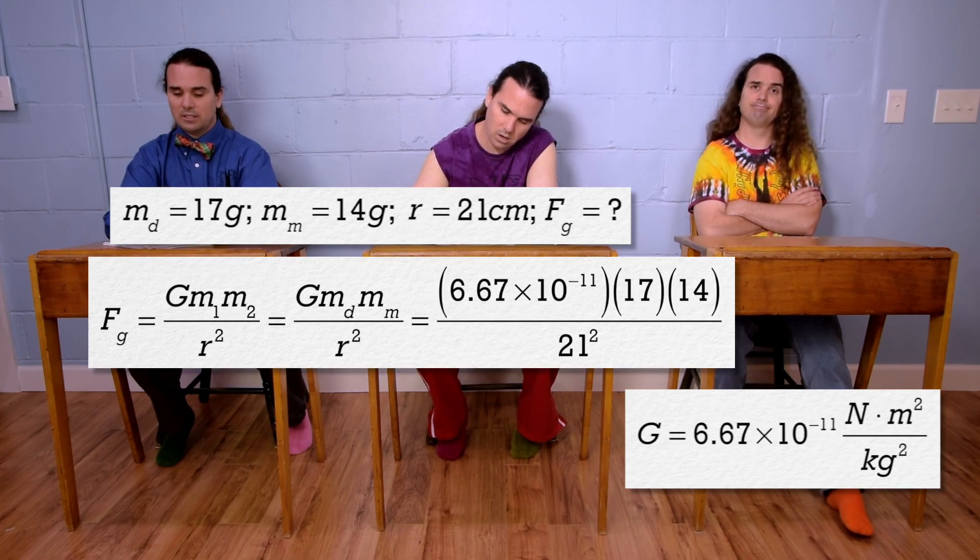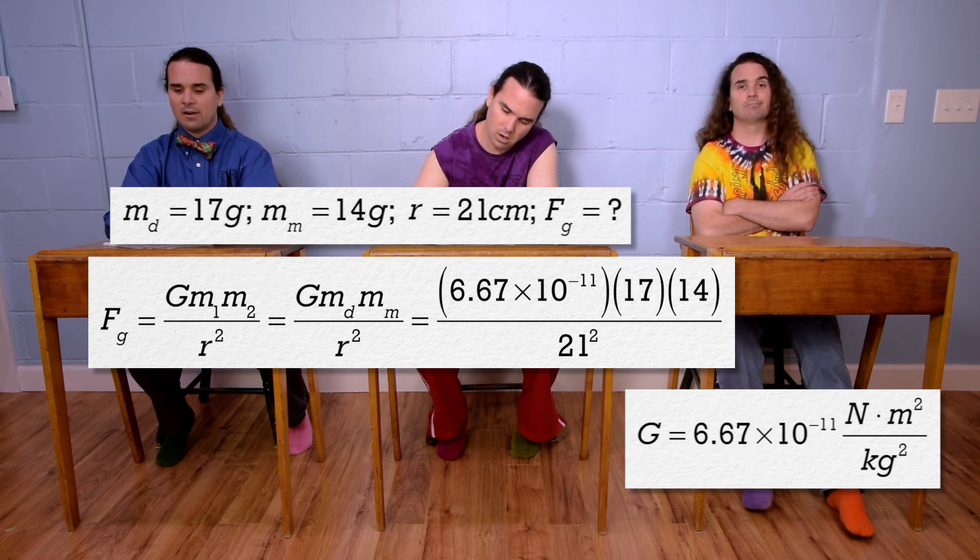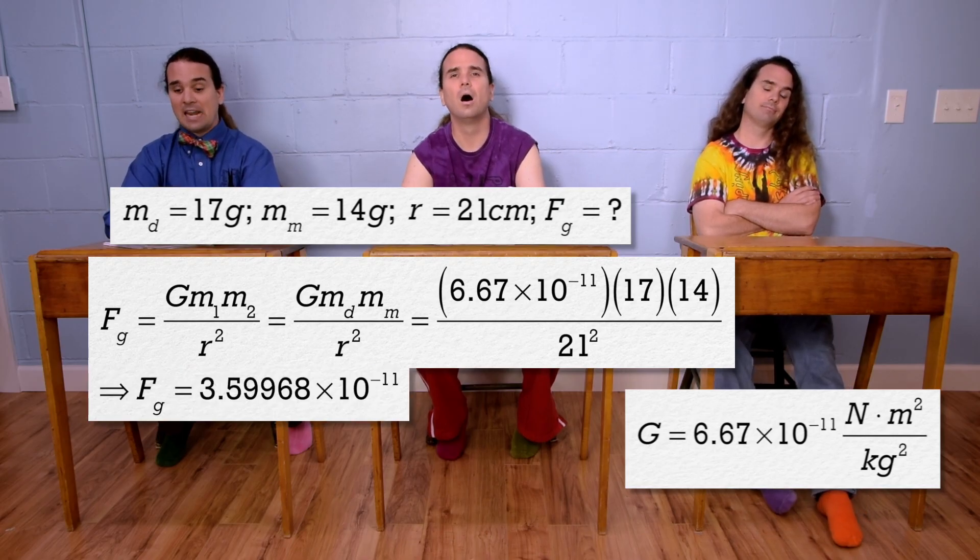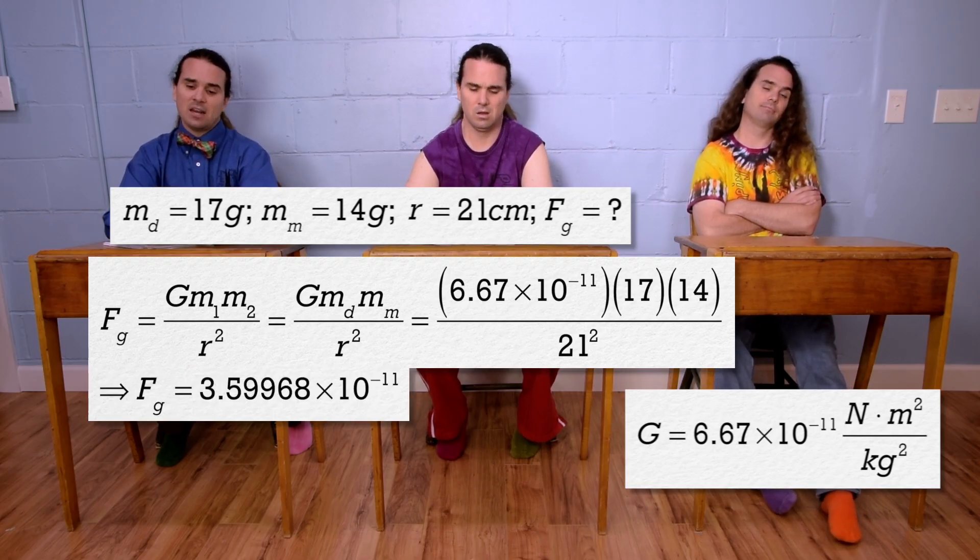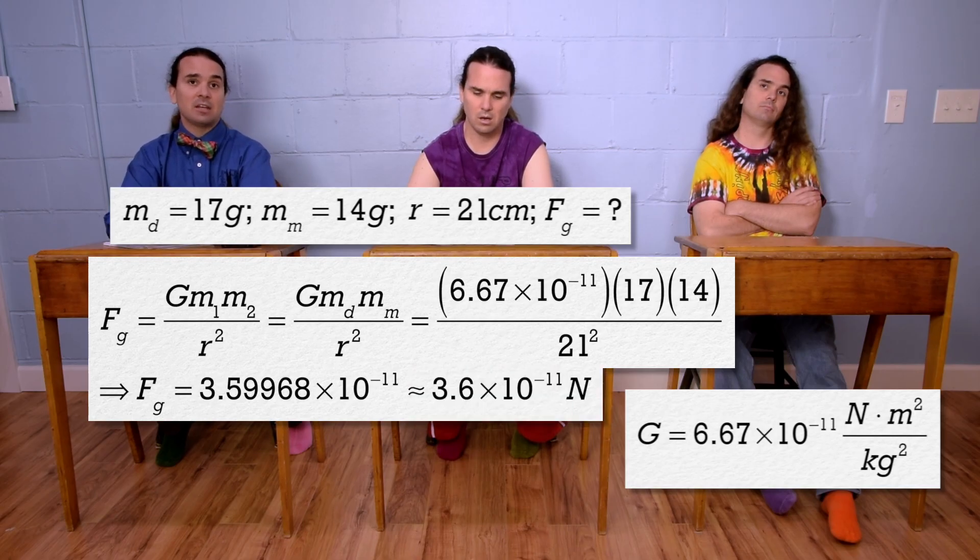So, 6.67 times 10 to the negative 11 times 17 times 14 divided by 21 squared is 3.59968 times 10 to the negative 11 or 3.6 times 10 to the negative 11 newtons with two significant digits.